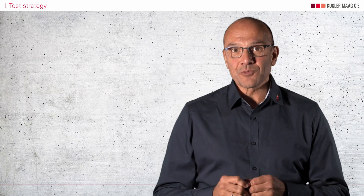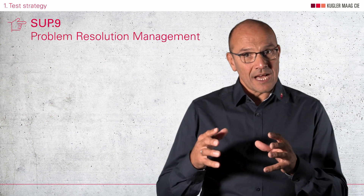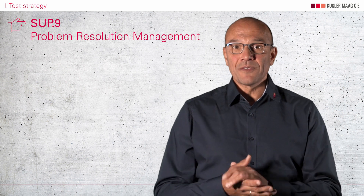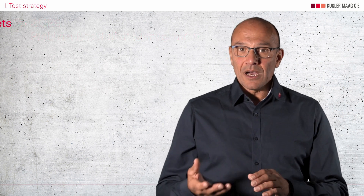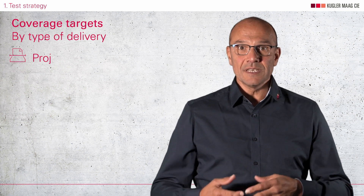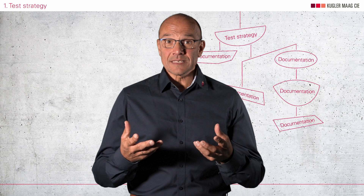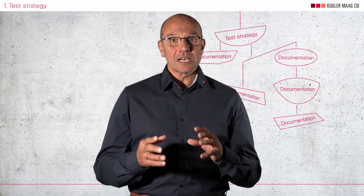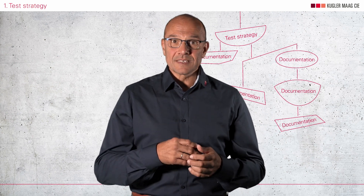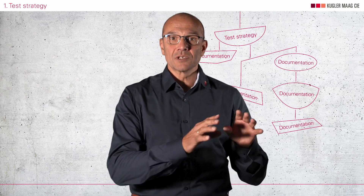This process has a very strong relationship with SUP.9 Problem Resolution Management. So you can either use the Test Strategy or the Problem Resolution Management Strategy on how to deal with failed tests. Part of the strategy is also to define coverage targets based on the type of delivery, which creates a strong link to the Project Plan and Release Plan. Part of the test strategy can be covered in the internal process description and guidelines. Automotive SPICE does not define how and where you document your test strategy — it can be distributed over several documents.